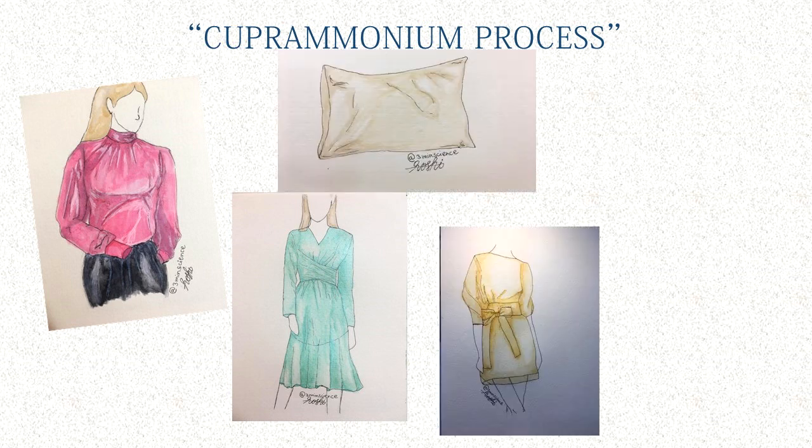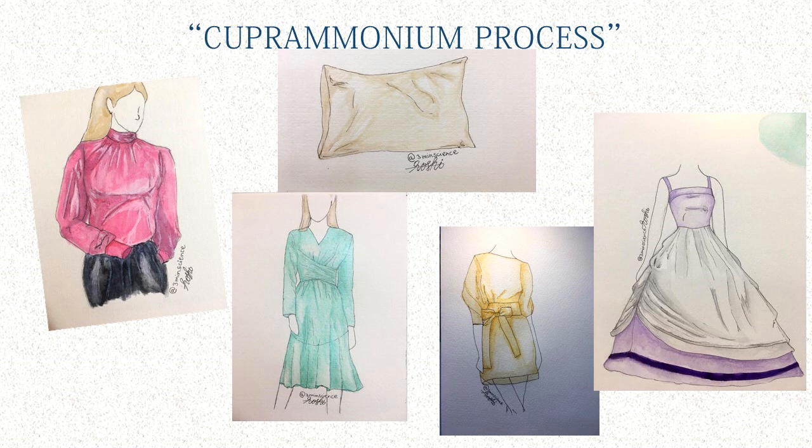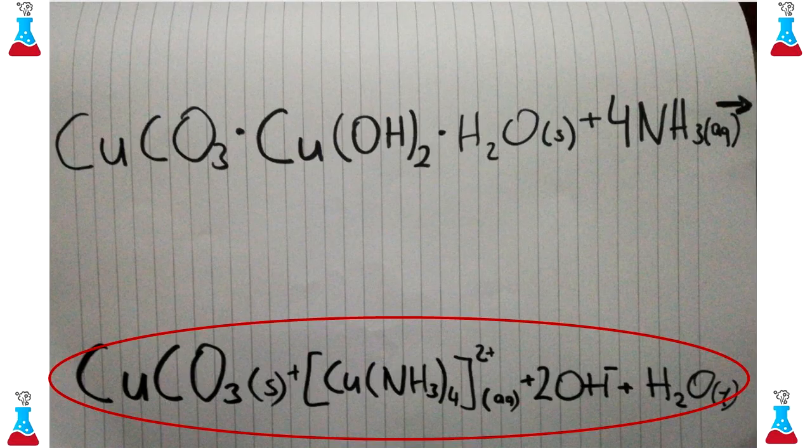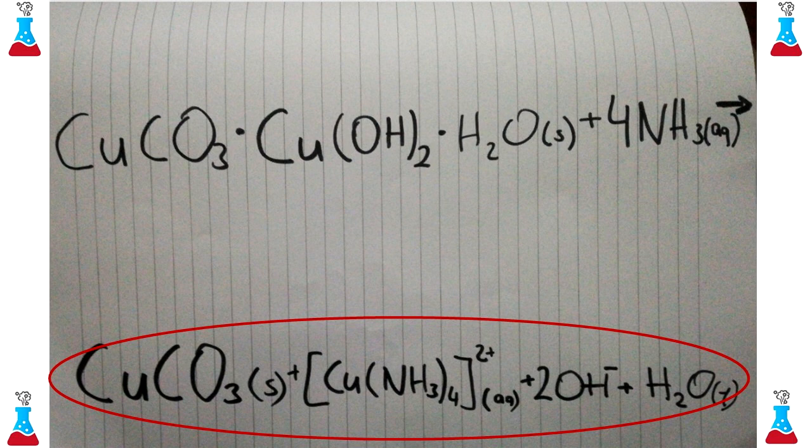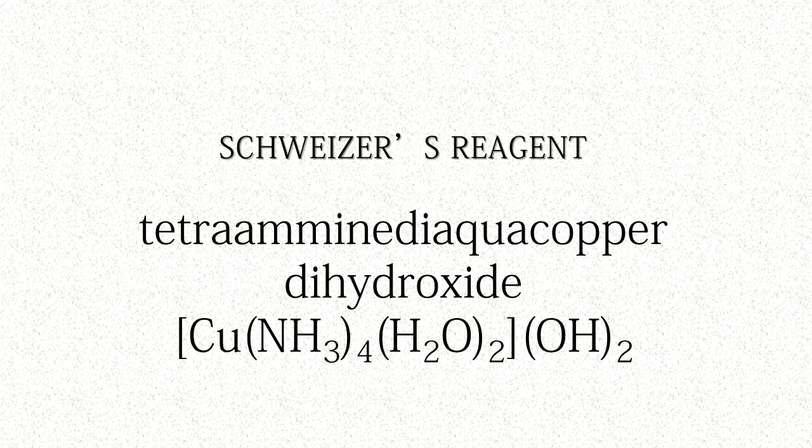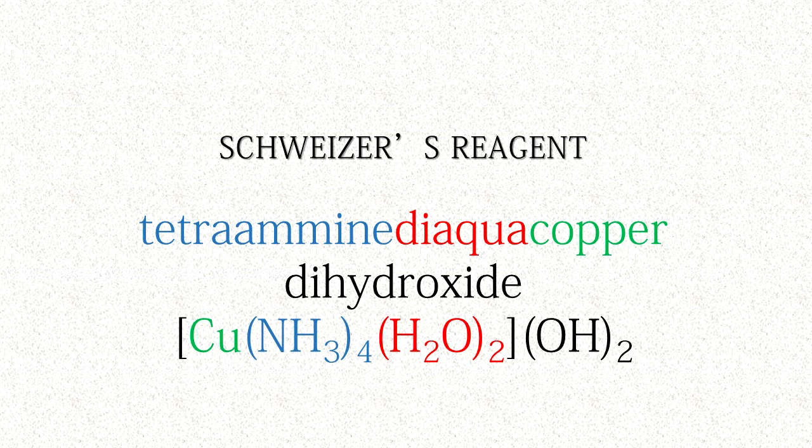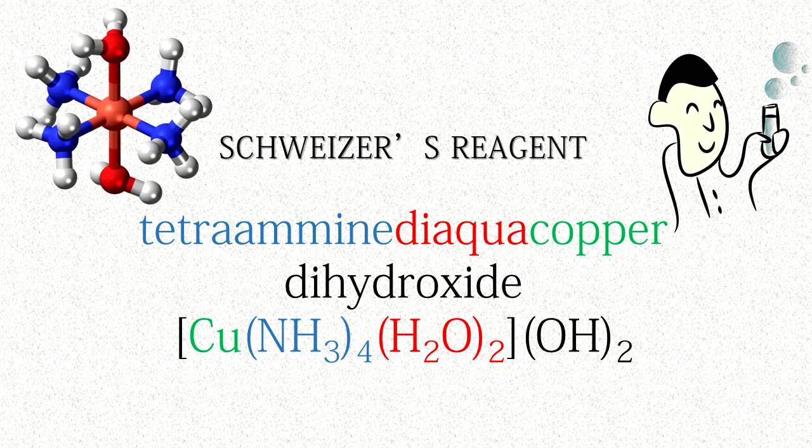The cuprammonium process duplicated in this activity is one of the earliest methods used for producing rayon. The end product in our reaction actually forms a complex compound known as Schweitzer's reagent, or tetraamine di-aqua copper dihydroxide. Its application was discovered in 1857 by a Swiss chemist known as Matthias Eduard Schweizer.